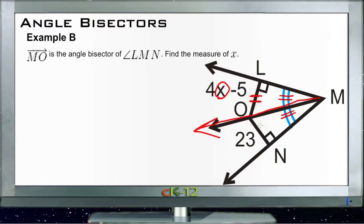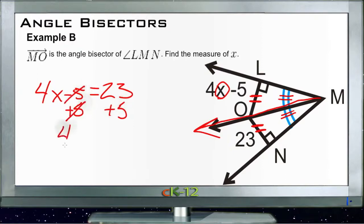congruent to this line here, which means that 4x minus 5 is the same thing as 23. So we just need to solve for x. We'll add 5 to both sides. The 5s cancel, we have 4x over here. 23 plus 5 is 28. Divide both sides by 4,